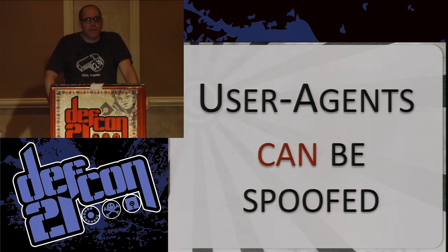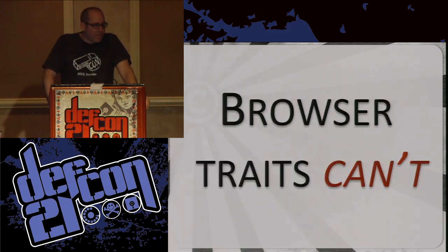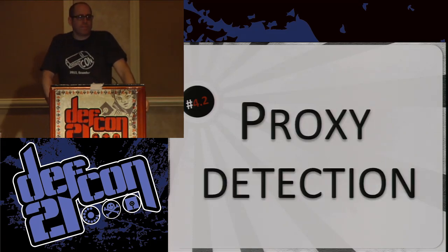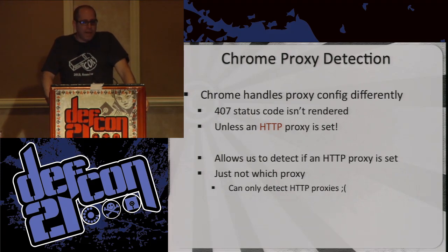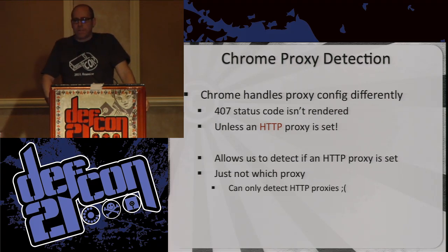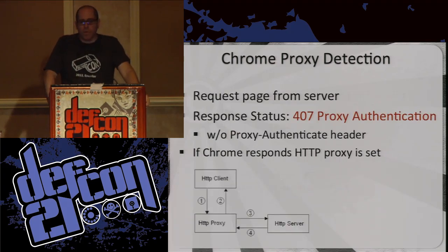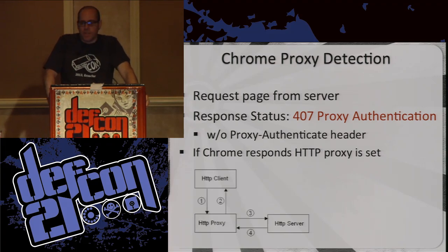User agents can be spoofed — everyone knows that. But browser traits are really hard to fake because your browser responds and does things in specific ways. So we can fingerprint browsers. Proxy detection: based on how Chrome handles the 407, if you have an HTTP proxy set, you can respond with a 407 and if Chrome loads the page, then they're using an HTTP proxy. It doesn't pick up SOCKS proxies, but your average user isn't using one. All you do is respond with a 407 with or without a proxy authentication header, and if Chrome responds, HTTP proxy is set.